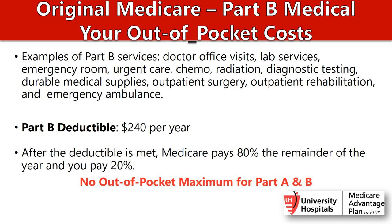Original Medicare Part B out-of-pocket costs: Part B services include doctor offices, lab services, emergency room, urgent care, chemo, radiation, diagnostic testing, durable medical supplies, outpatient surgery, outpatient rehab, and emergency ambulance services. In 2024, there's a Part B deductible of $240. After that deductible is met, Medicare pays 80% for the remainder of the year and you pay 20%. Importantly, with original Medicare there is no out-of-pocket maximum for Parts A and B, so if you're receiving chemo or radiation, you'll pay 20% with no cap for the remainder of the year.